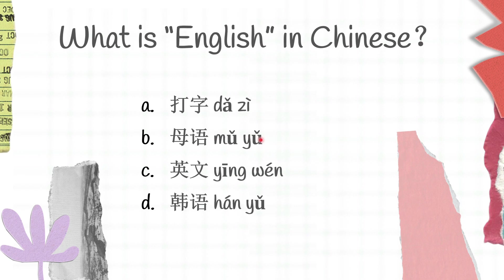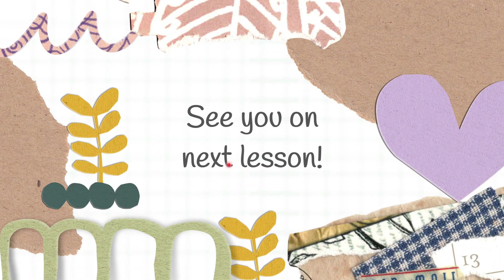Finally, the last question for today: What is English in Chinese? A 八字, B 母语, C 英文, D 韩语. Which one do you think is the correct one? 八字 is type, 母语 is mother tongue, 英文 is English, 韩语 is Korean language. And C is the correct answer — 英文. Thanks a lot for your time, that's all for today's quiz. I will see you again in our next lesson!